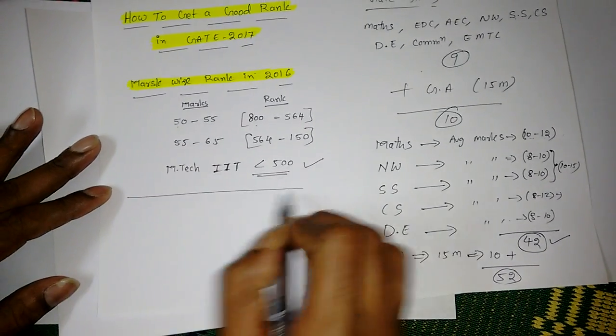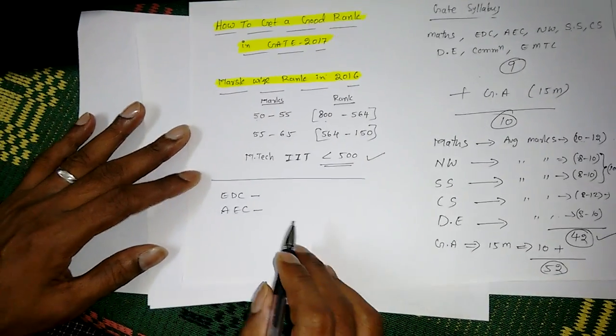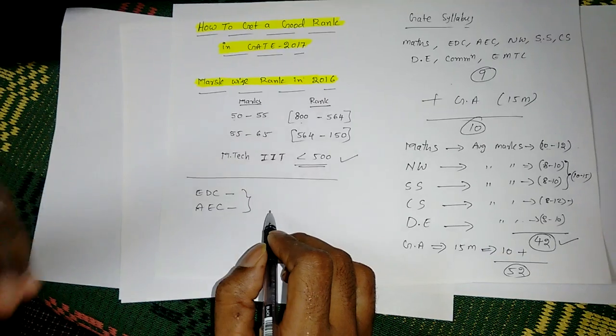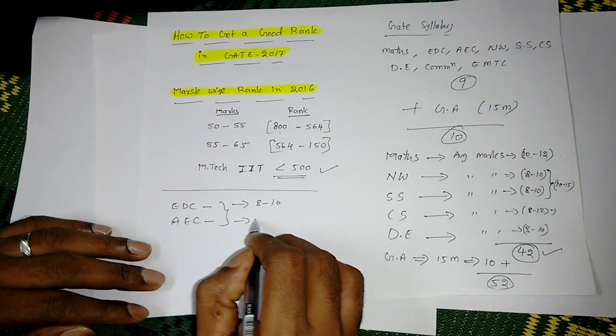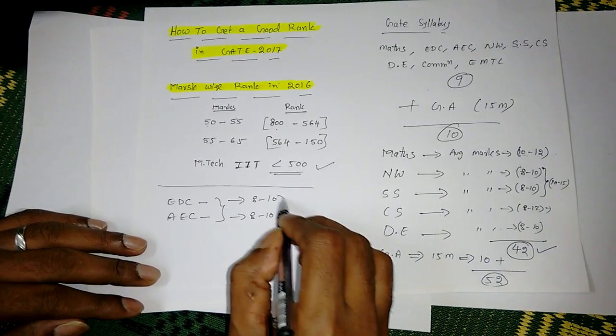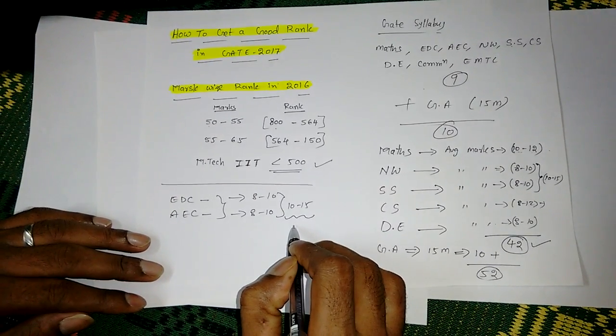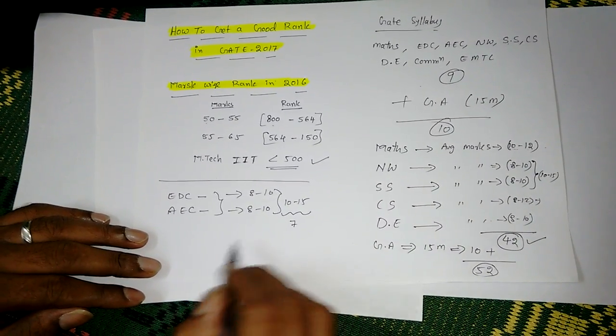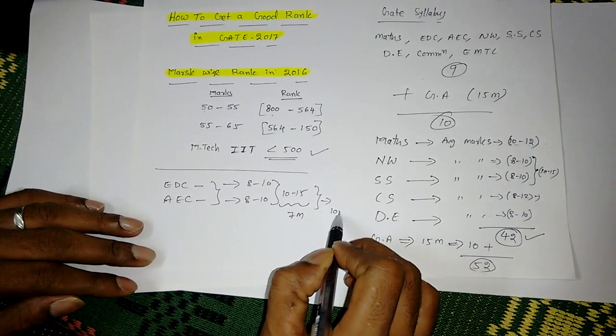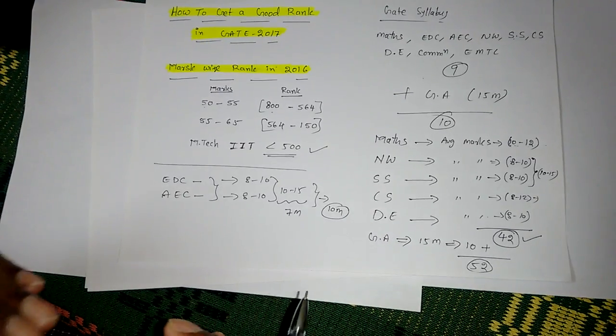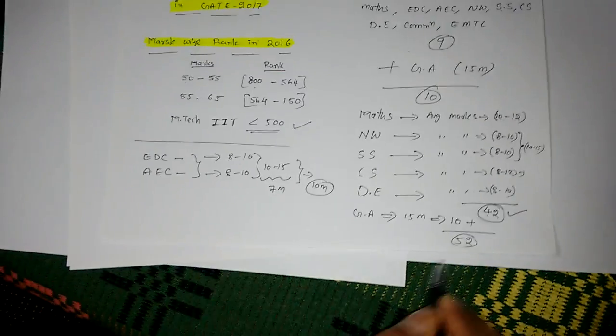If you learn simple basics in EDC and AEC, you cannot make 100% but you can get marks. EDC they will give 8 to 10 marks, again AEC 8 to 10 marks, so overall you will get 10 to 15 marks from these two subjects. If we score at least half, that is 7 marks from these two subjects, this is minimum. But if you practice more you can get at least 10 marks also. That's for getting higher ranks like below 100 or below 200. So 52 plus 10 marks, you are getting total 62 marks.